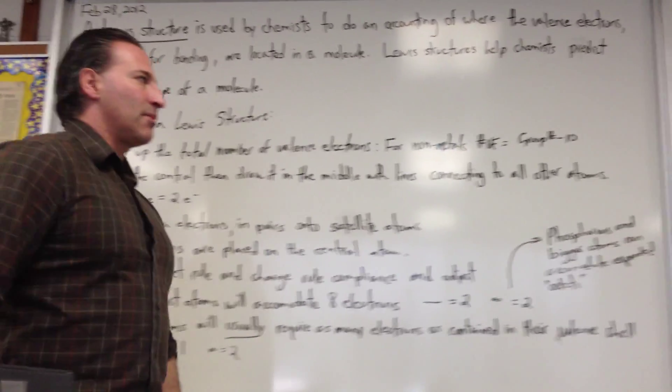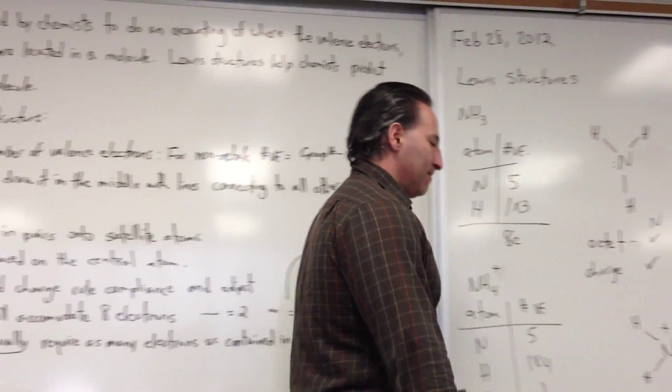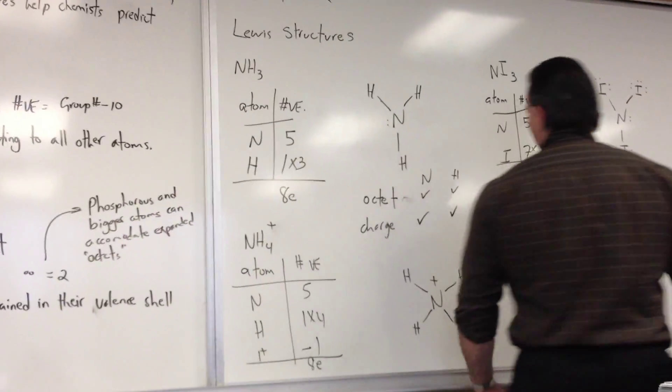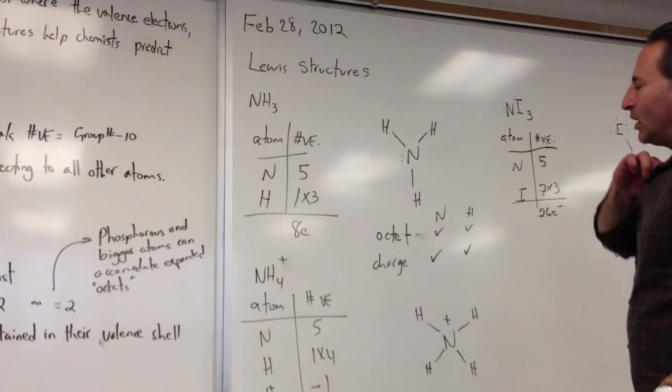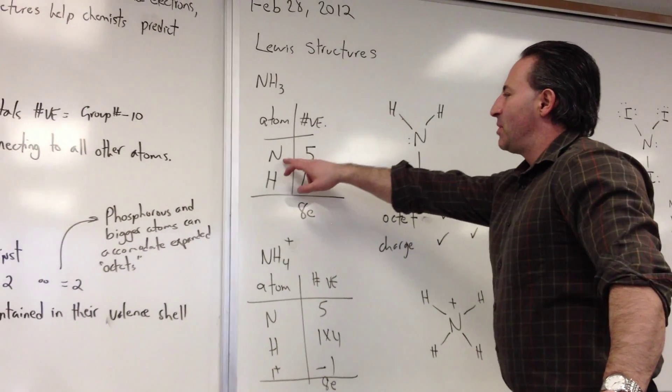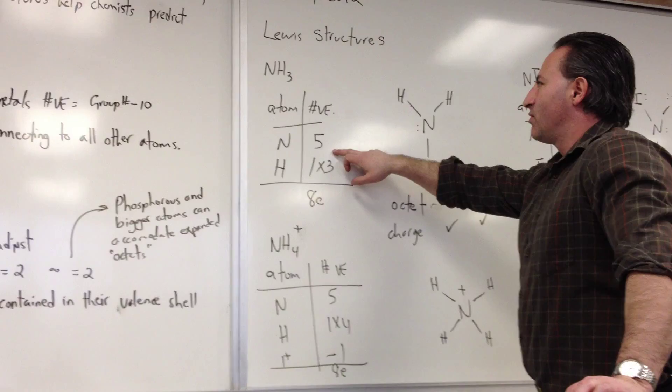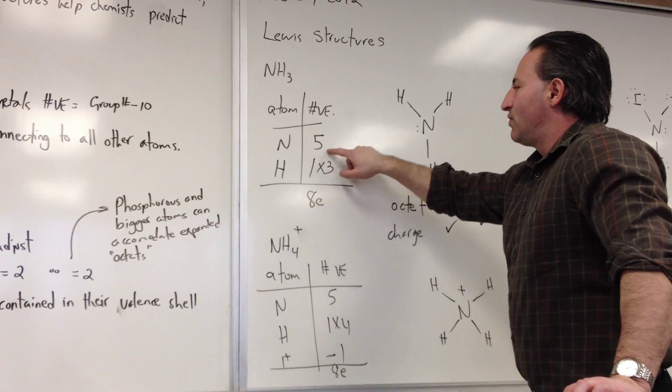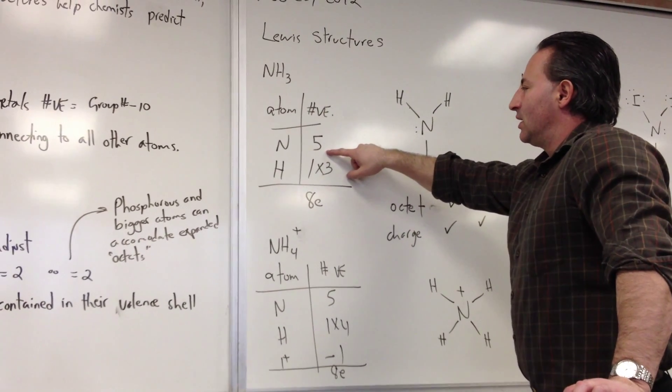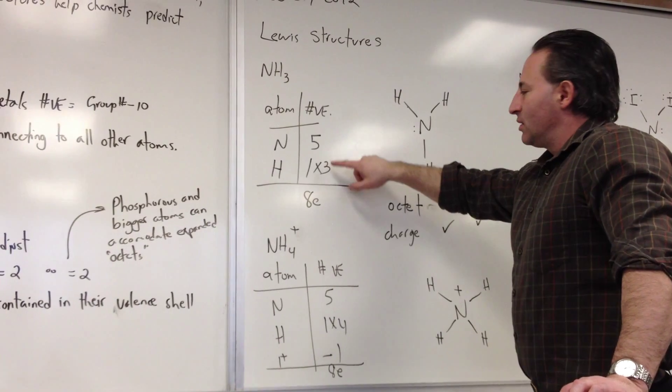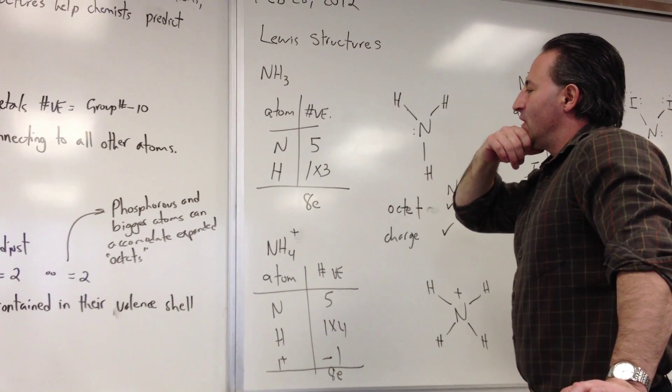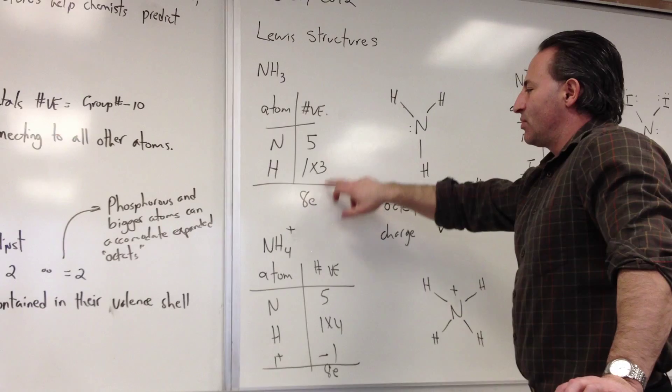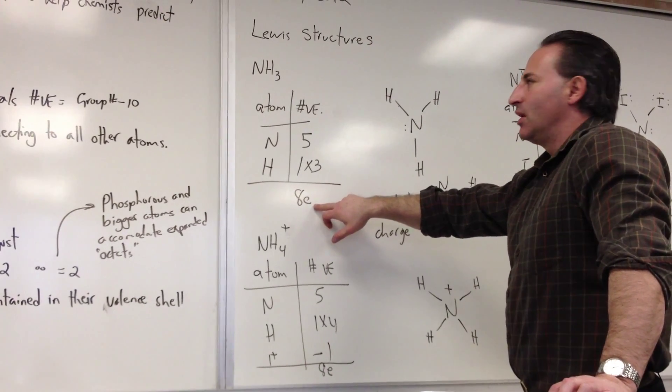If we do a couple of worked out examples, you'll see how those rules apply. Let's draw a Lewis structure of ammonia. First of all, we count up how many available electrons are present in the constituents of ammonia, which is NH3. There are 5 for nitrogen and 1 for each hydrogen, of which there are 3. So a total of 8 electrons appear in ammonia.